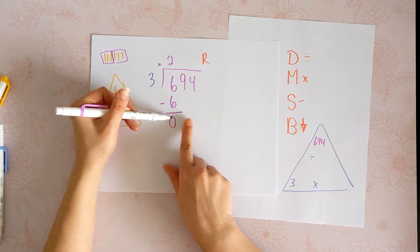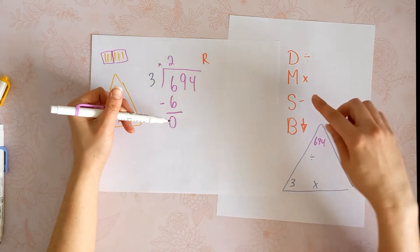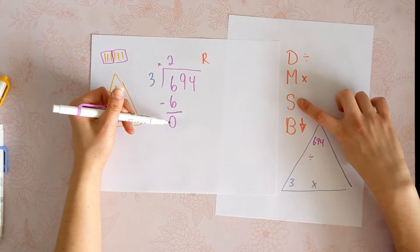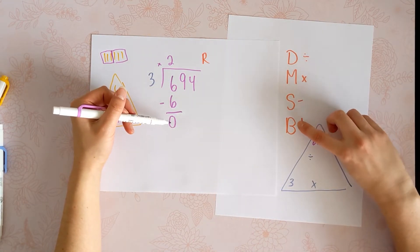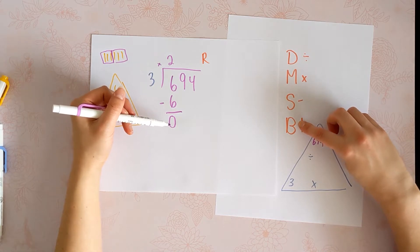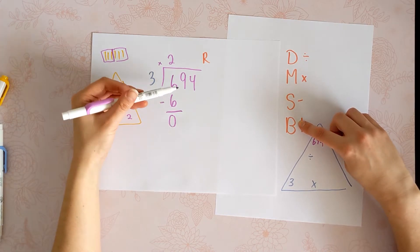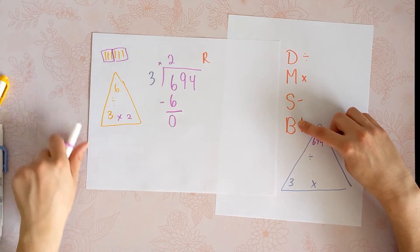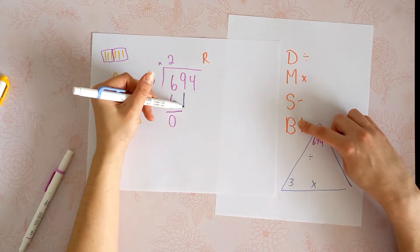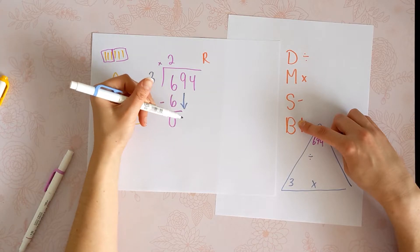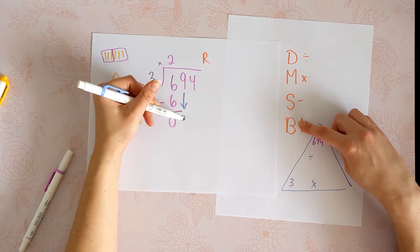But don't worry, I'm not done — if you just follow the steps, you can see we need to bring something down. We can't do much with that 0, but we're bringing down a 9, and you can absolutely work with that.